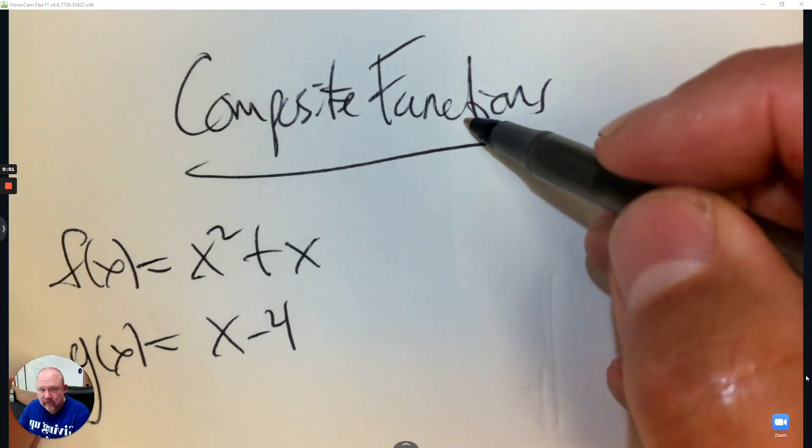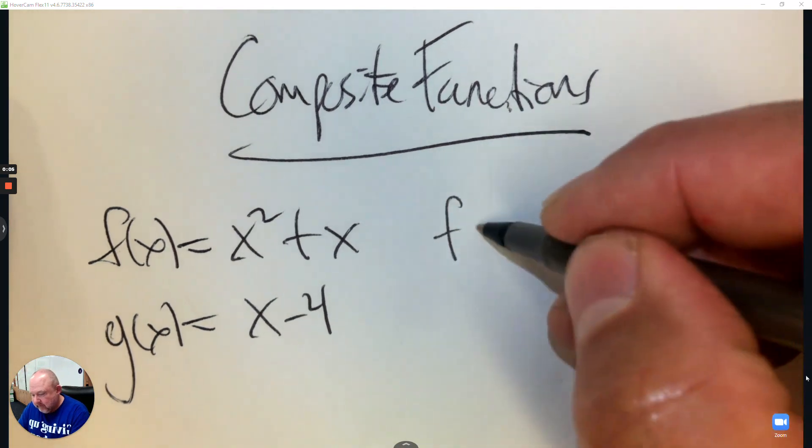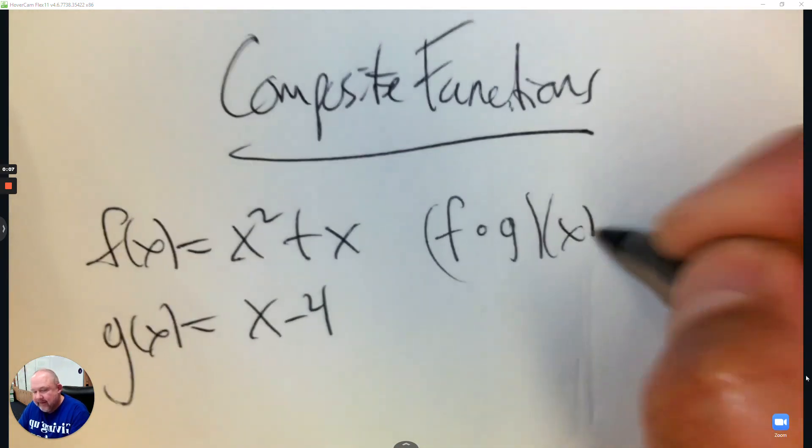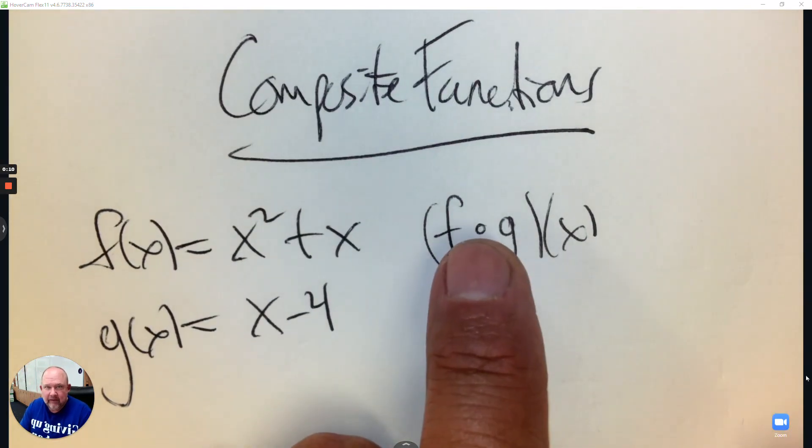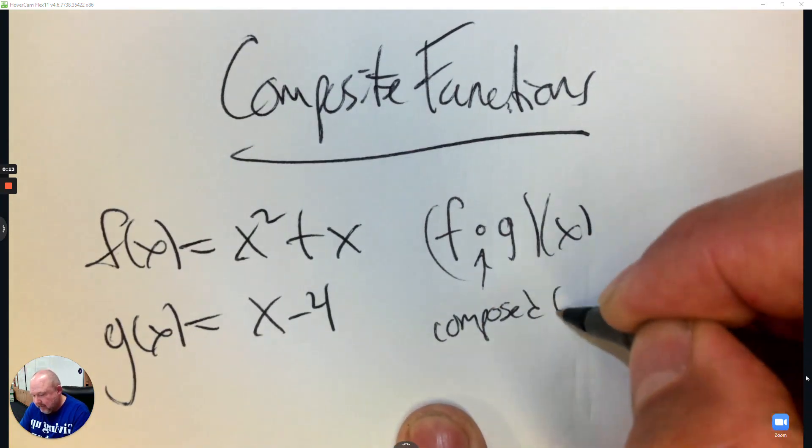All right. Composite functions review. So write down these two functions. This is a new symbol. That little hole means composed by. That's what that means. Composed by.